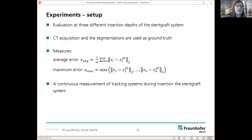So, what have we done in our experiment? We have inserted our stent graft system by using guide wires and catheters, and then evaluated our method at three different insertion depths. For the evaluation, we made CT acquisitions, and the segmentations of the CT acquisitions were used as ground truth. And the measures we used are the average error and the maximum error. And also, we made a continuous measurement of the tracking systems during the stent graft system insertion.